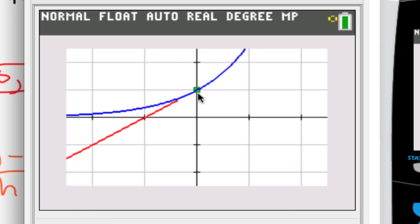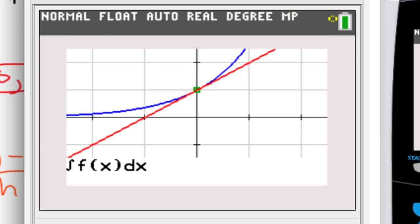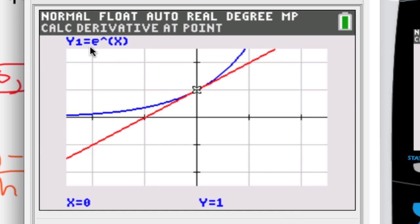So again, that's our point 0, 1, the point of tangency, and our other two lines, our curve and then our linear equation at this point. Let's go ahead and verify that the slope is 1. So let's go to second and then trace, we want to go down to option 6 which gives us the derivative.